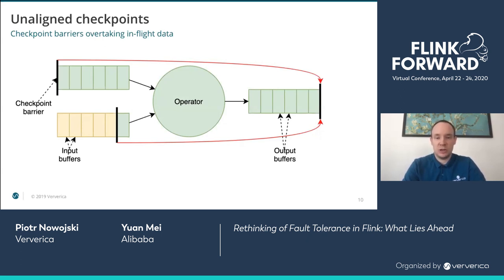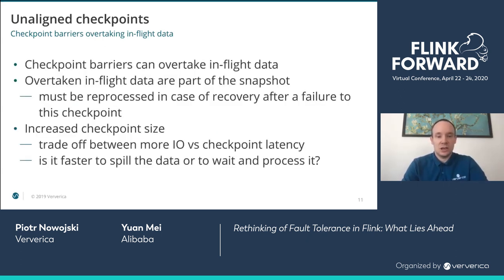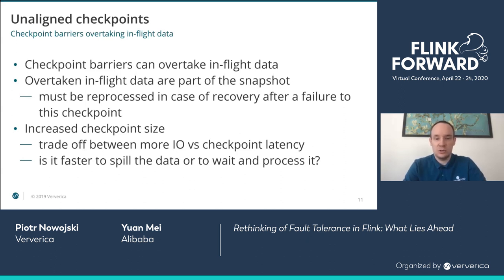This dramatically speeds up checkpoint barrier propagation through the job graph, even if records are being processed slowly. In case of failover, those captured in-flight data will need to be reprocessed before processing new data. This shows the trade-off compared to aligned checkpoints: we will be increasing checkpoint size, meaning more IO operations, in exchange for quicker checkpointing. Sometimes aligned checkpoints might still be faster. The basic question is: is it faster to spill the data or wait and process it? The answer depends on the user's application and cluster setup. Unaligned checkpoints will be faster if spilling in-flight data is faster; aligned checkpoints will be faster if processing the in-flight data is faster.